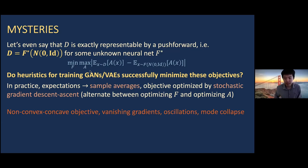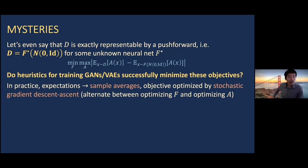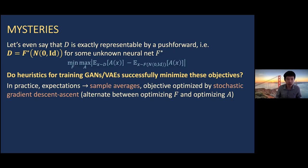Regarding how good the approximability assumption is: neural networks are well known to have universal approximability capabilities. With a sufficiently large polynomial number of parameters, this is a very reasonable assumption in terms of getting inverse polynomial approximation accuracy. Whether it's exactly representable is a dicier question, but the algorithms we propose are fairly robust to at least inverse polynomial additive noise. This is more of an aesthetic choice, since the family of neural networks is so expressive in terms of capturing real-world functions.